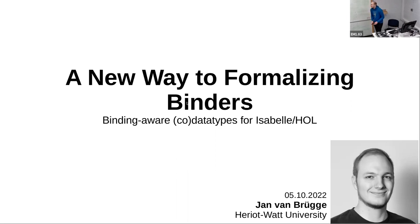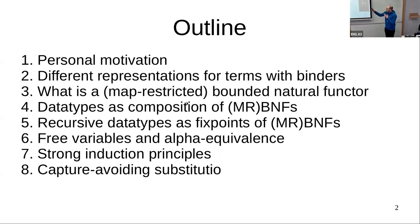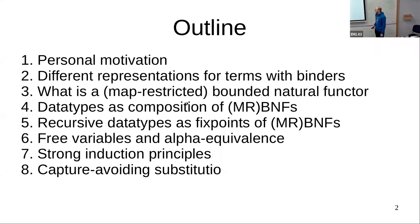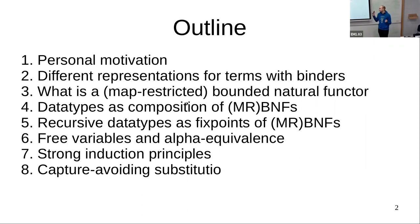Okay, so now a talk about new binders for Isabelle. I'll first speak about why I'm doing this at all, then what are the different ways theorem provers represent binders, then what is the core of the whole thing — a map-restricted bounded natural functor — then how we can write data types as a composition of these MRB maps, then create proper recursive data types with nice induction principles with the variable convention built in, and finally how to define capture-avoiding substitution.